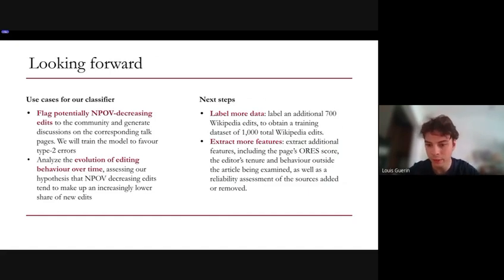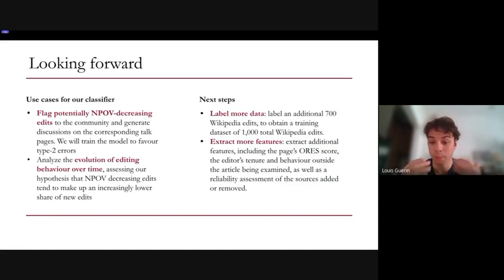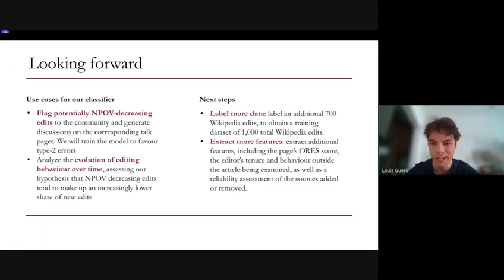In terms of use cases, we see two main examples. First, for the community, this classifier could be used to flag potentially NPOV-decreasing edits, generate discussions on talk pages, and ensure that such edits are quickly discussed when they are made. Second, we also want to use this tool in a more analytical way. Our main hypothesis is that the share of NPOV-decreasing edits tends to decrease over time, and we want to prove that by looking at NPOV-decreasing and NPOV-increasing edits over time for a given article.